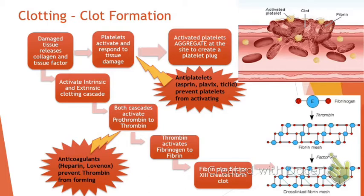The intrinsic and extrinsic clotting cascades have a bunch of clotting factors, but you don't need to memorize them. Both cascades and all their different factors end up converting prothrombin to thrombin. Thrombin then makes fibrin, and that fibrin clot is a nice mesh of proteins that adheres over the platelets and creates our scabbing clot.